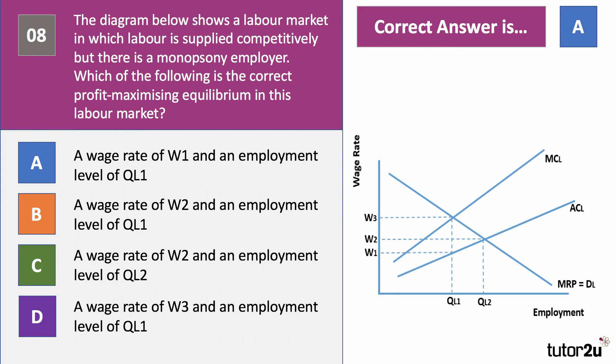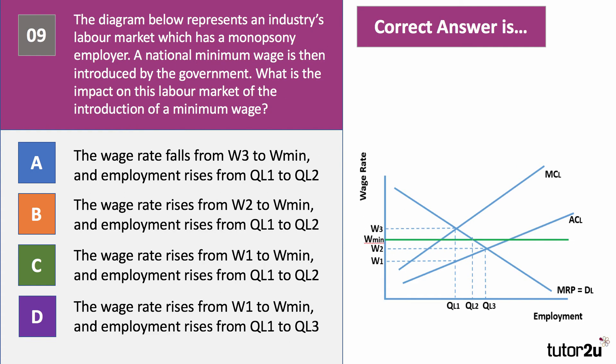Two questions to go. The diagram represents an industry labour market with a monopsony employer, but then a national minimum wage is introduced by the government. What is the impact on this labour market of the introduction of a minimum wage? Have a go — press the pause button, think about it, and come back. We'll go through the answer together.